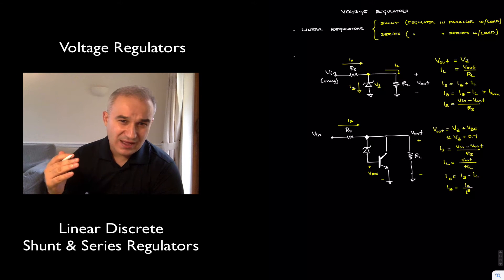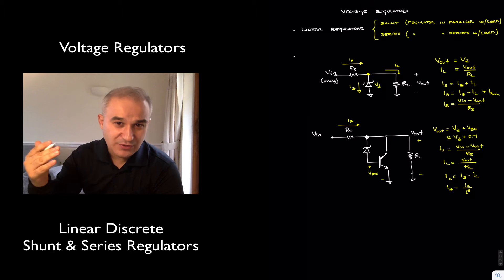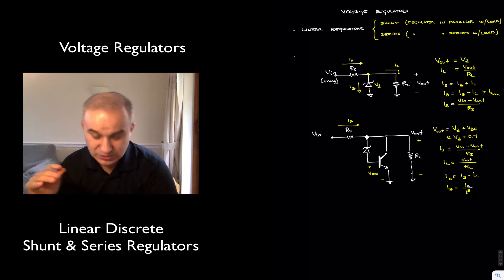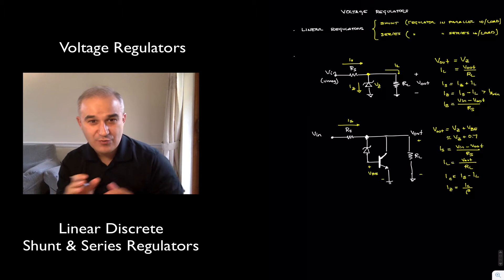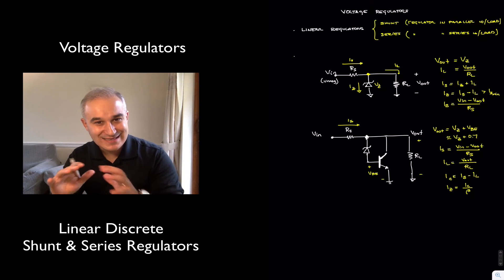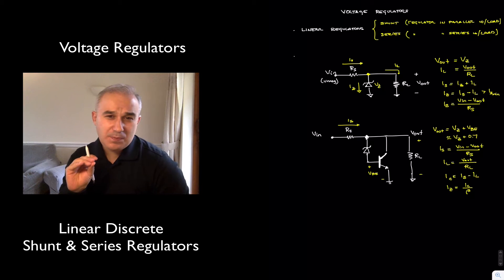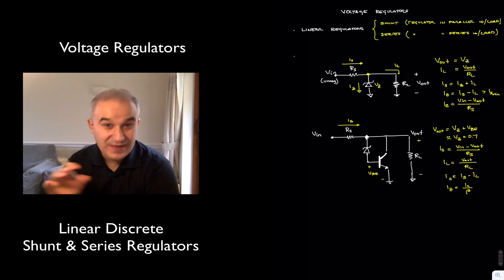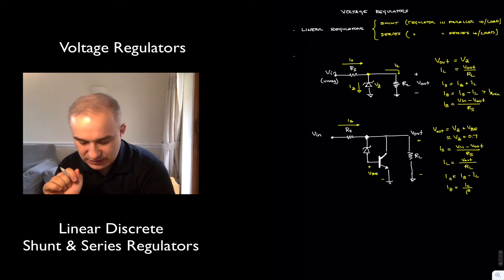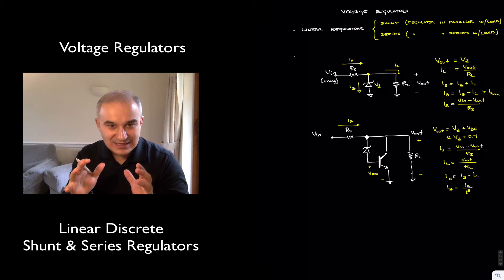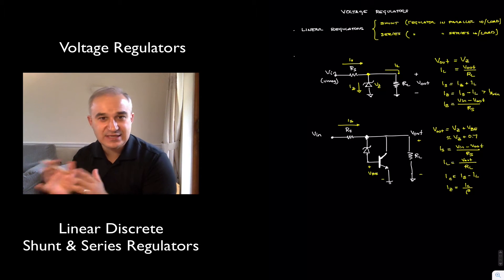And I'll do a few examples on shunt regulators and series regulators. Now, shunt regulators, these are regulators where the regulating circuit, the regulating device, is placed in parallel with the load. And they are typically easier to design, but they are less efficient than the series regulators, where the regulating circuit is placed in series with the load.